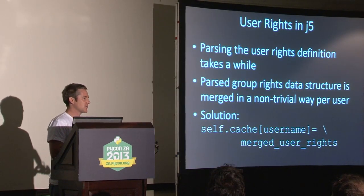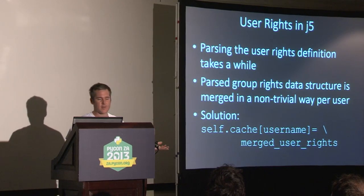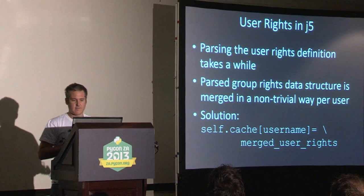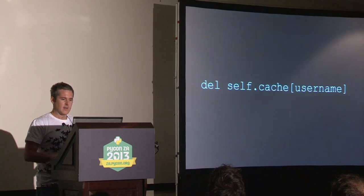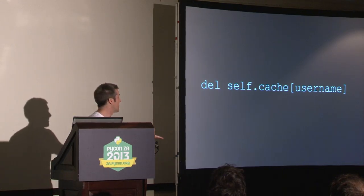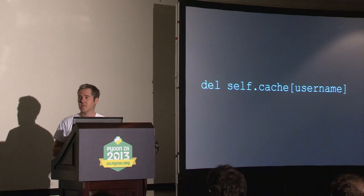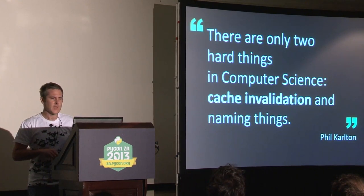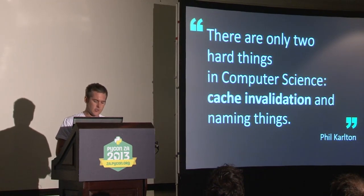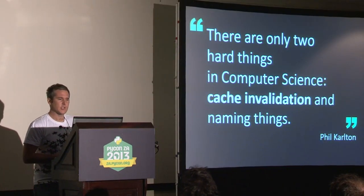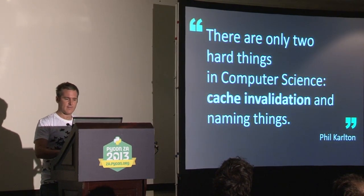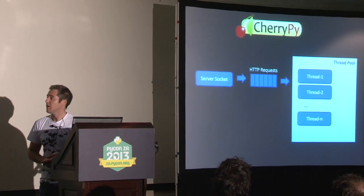Of course, sometimes something changes that means that data is no longer valid — for example, the user gets moved to another part of the plant, or their role changes and the administrator changes the group they belong to. Now we have a dictionary with invalid data in it. When one of those source bits of data changes, we can remove that entry from the cache — that is called cache invalidation. As Phil Karlton said, and this is one of those things you may have heard once or twice: 'There are only two hard things in computer science: cache invalidation and naming things.' But that didn't seem too hard, so we may have to come back to this.